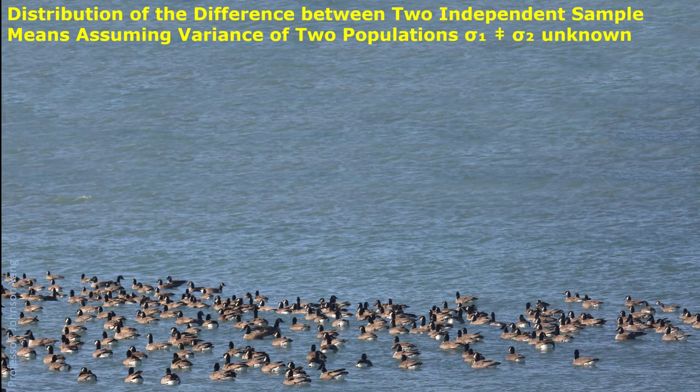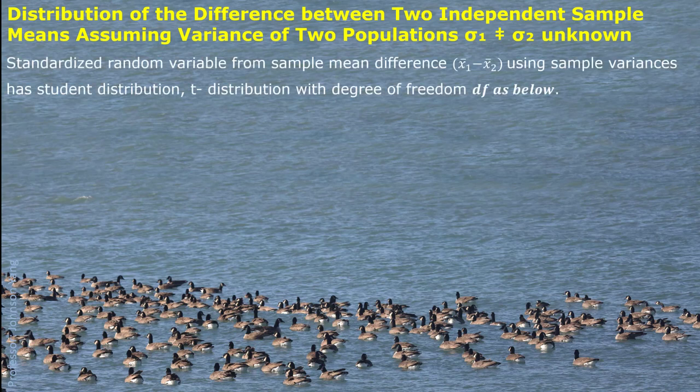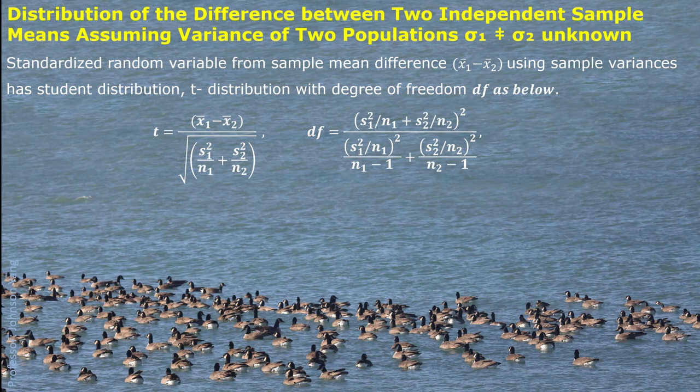In the general situation, if we do not know the population standard deviation and cannot assume equal variance, then the standardized random variable from the sample mean difference still follows a t-distribution, but the degrees of freedom are calculated by a more complex formula. It looks complicated, but it is convenient to calculate in Excel.